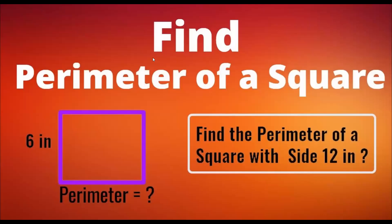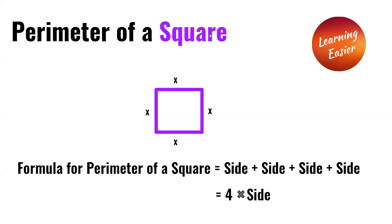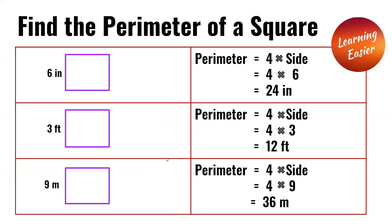Welcome to Learning Easier. Today, we're going to find the perimeter of a square. The formula for the perimeter of a square is: side plus side plus side plus side equals 4 multiplied by the side.